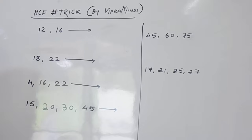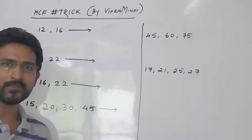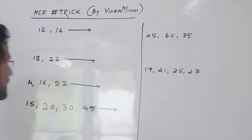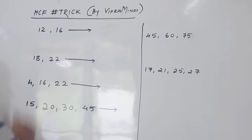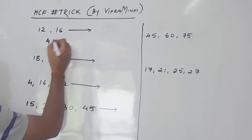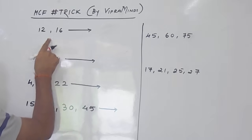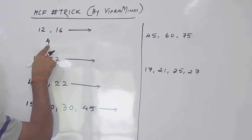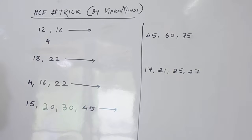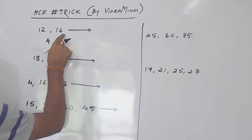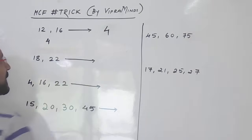For example, you want to find out the HCF of 12 and 16. What you have to do here is find out the difference between the two numbers. The difference between 12 and 16 is 4. Now check whether that difference is the divisor of the numbers. 4 is the divisor of 12 and 4 is also the divisor of 16, so the HCF will be nothing but 4.